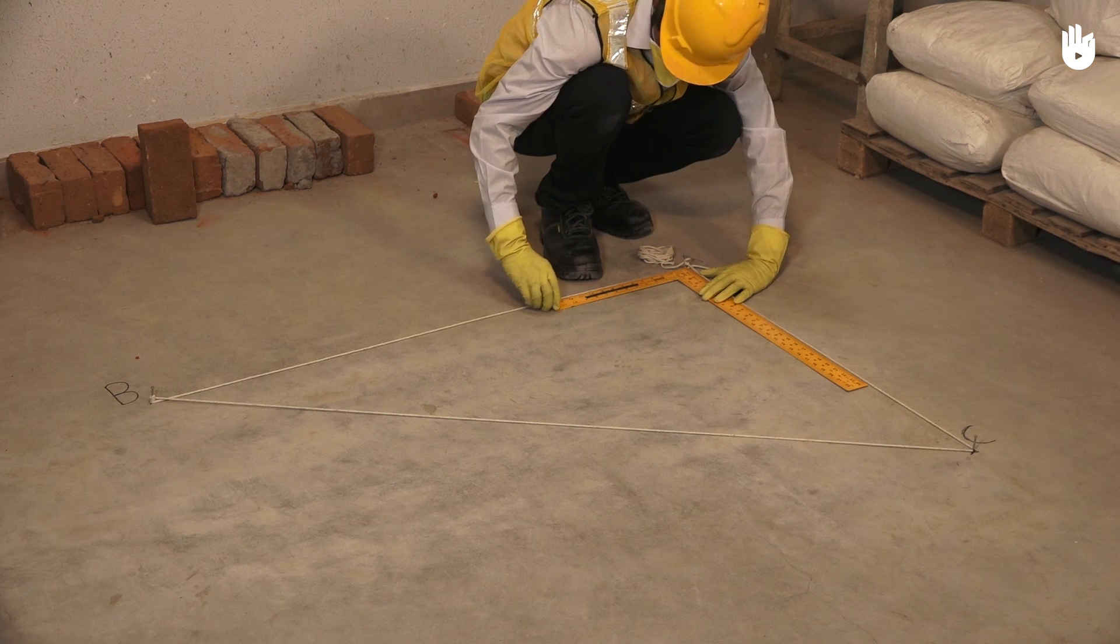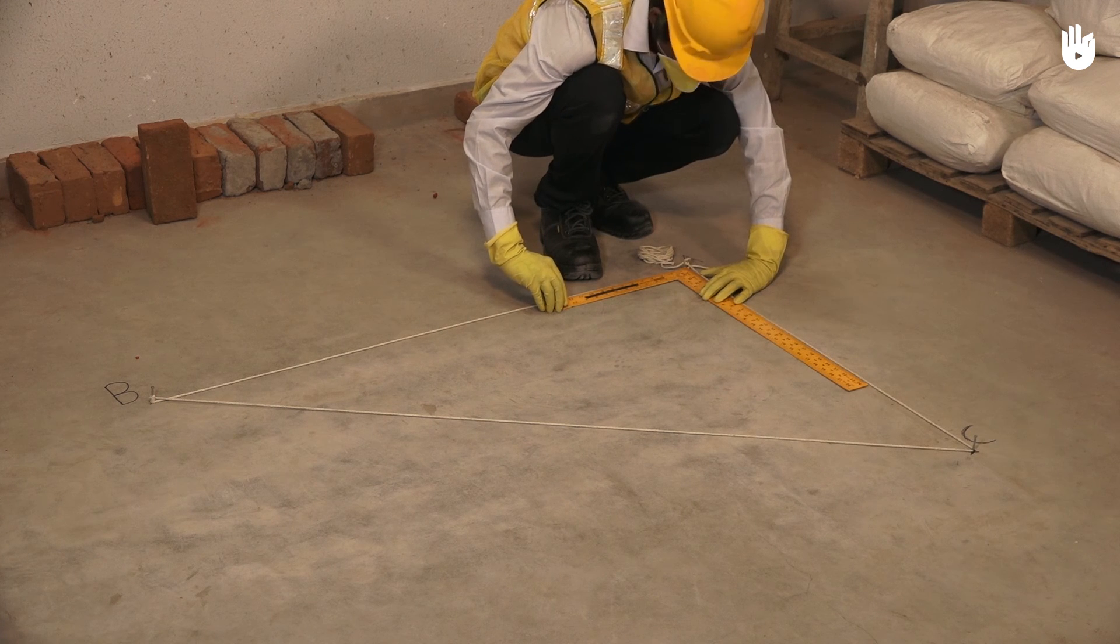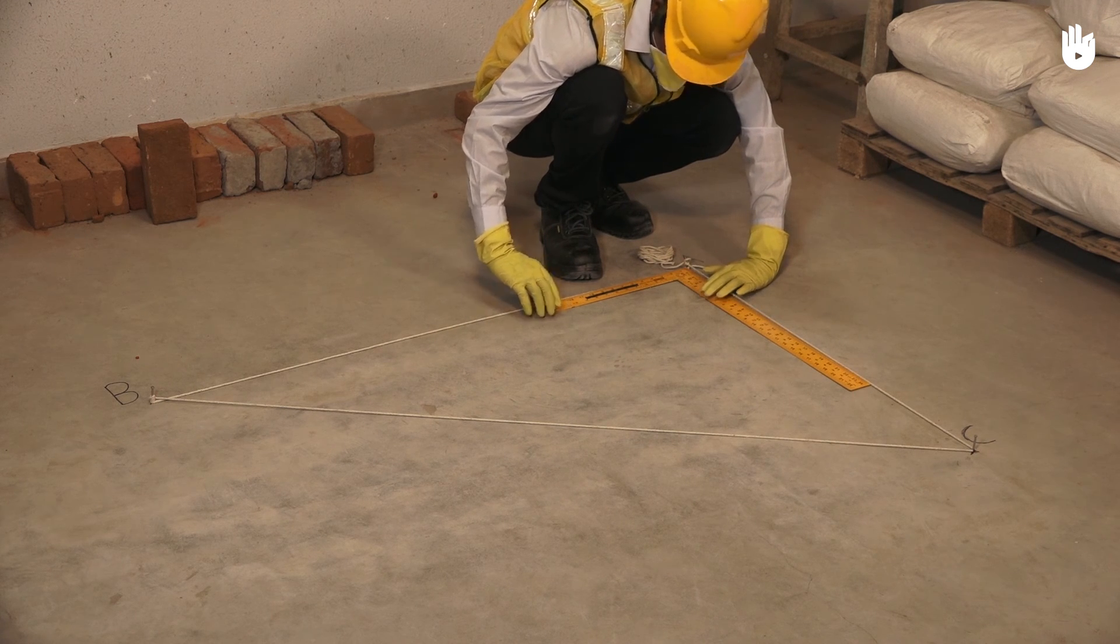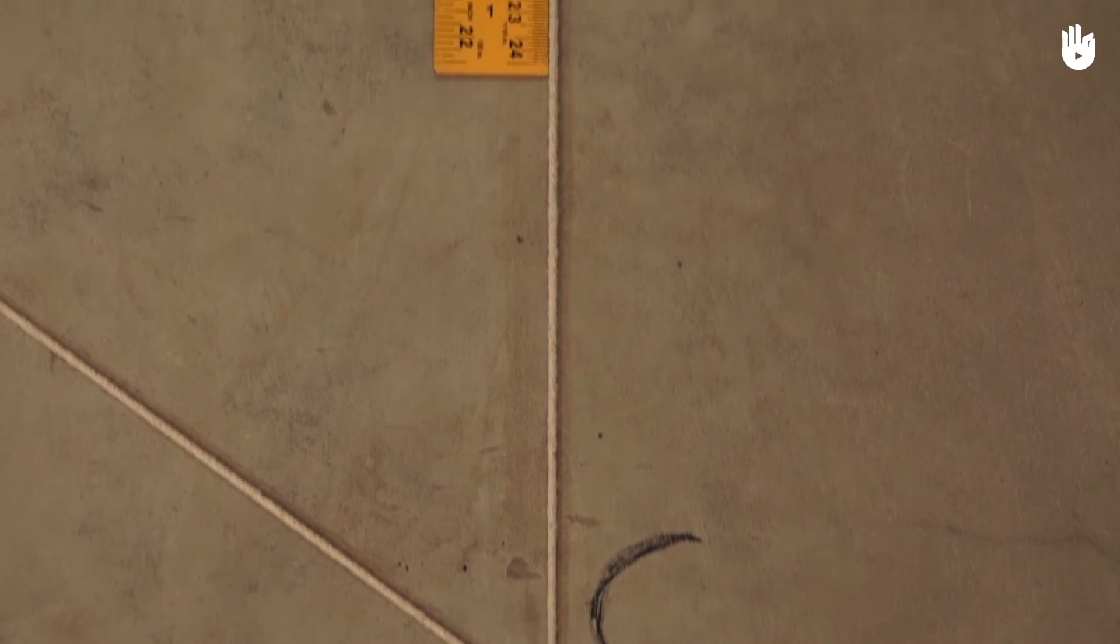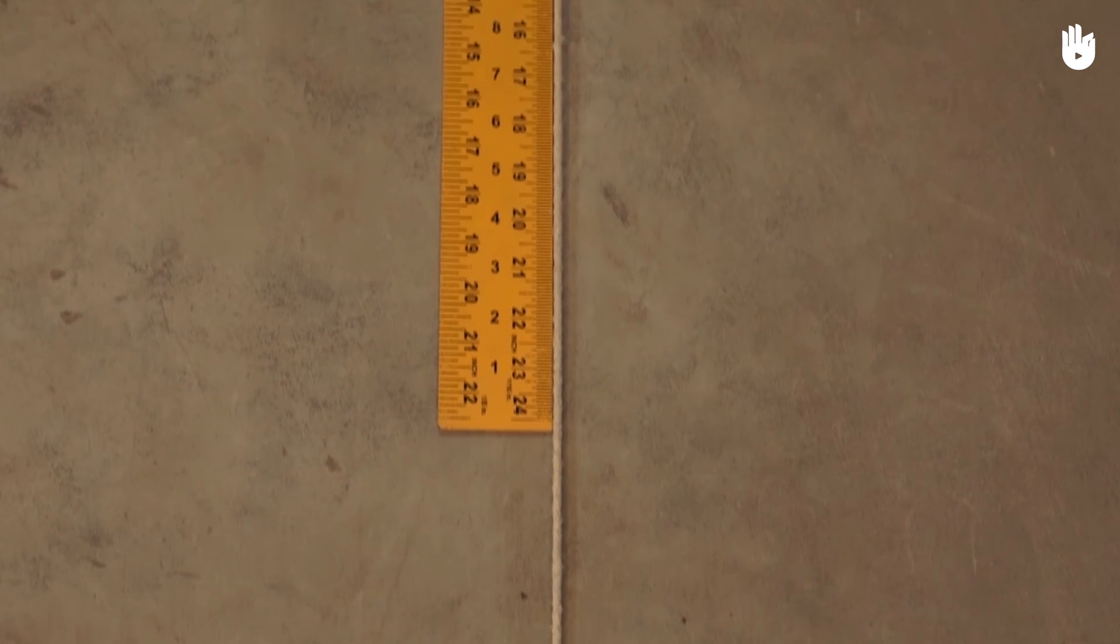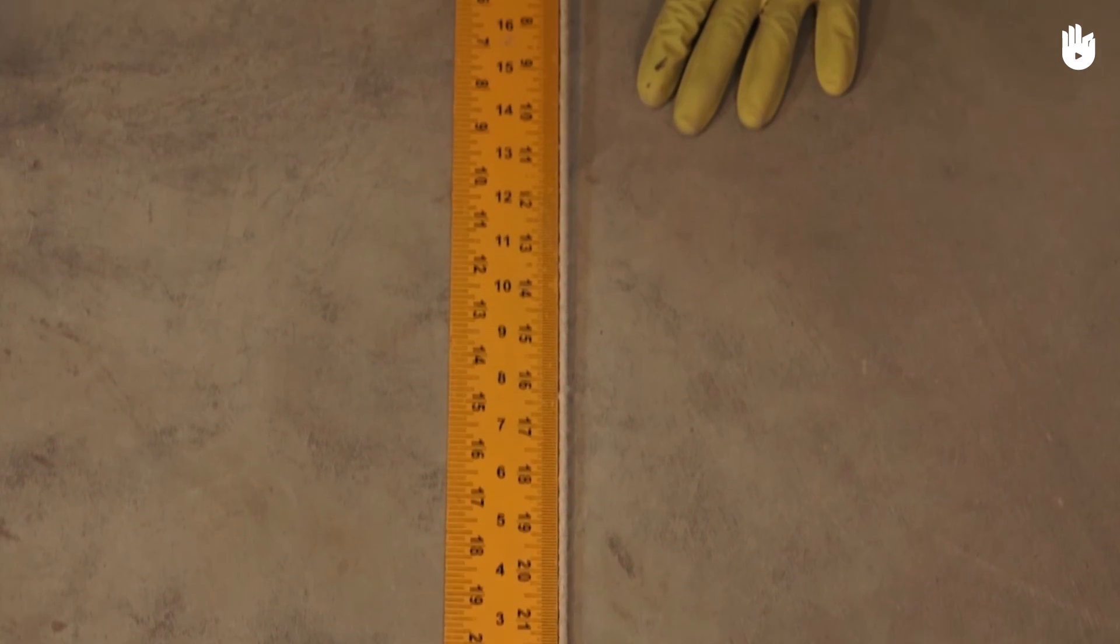If these steps have been followed accurately, the angle BAC will measure 90 degrees. You have now learned to find a 90-degree angle using the 3-4-5 method.